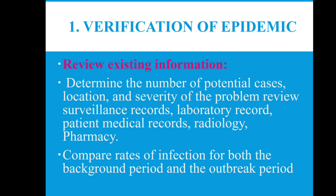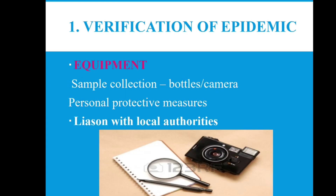Review the existing information to determine the number of potential cases, the locations and severity of the problem. Review surveillance records, laboratory records, patient medical records, and radiology and pharmacy records. Compare rates of infection for both the background period and the outbreak period. Equipment required for verification includes sample collection equipment like bottles, cameras, personal protective measures, and obtaining licenses with local authorities.